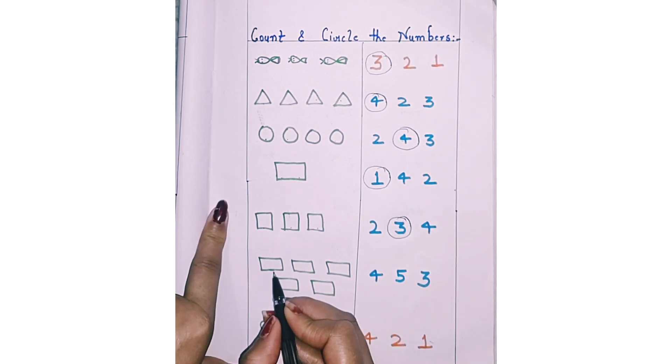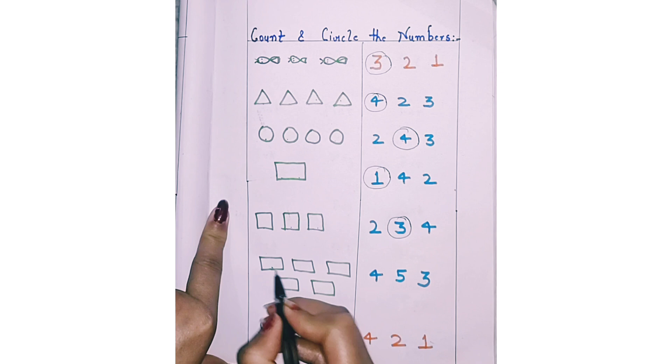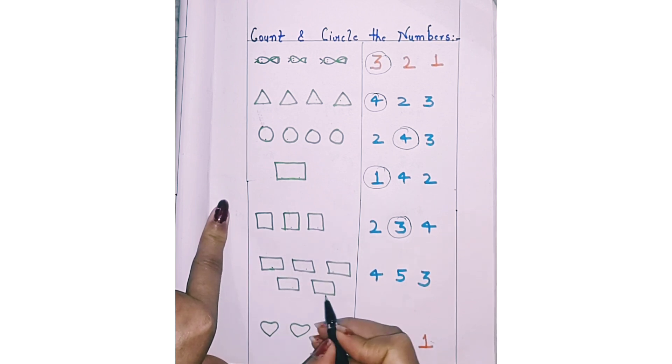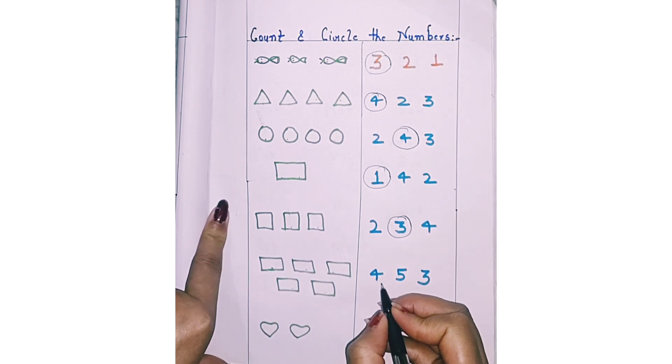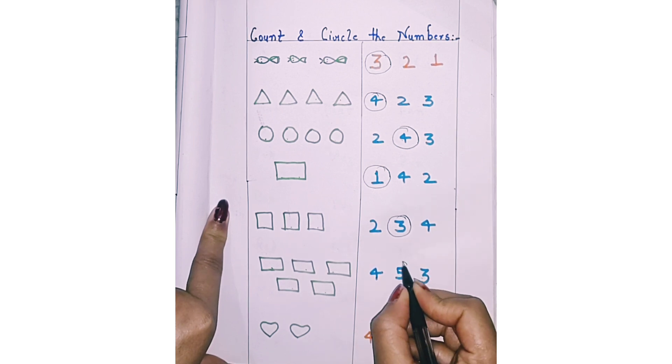How many rectangles are there? Count with me. 1, 2, 3, 4, 5. 5. Circle 5. 4, 5, 3. Circle 5.